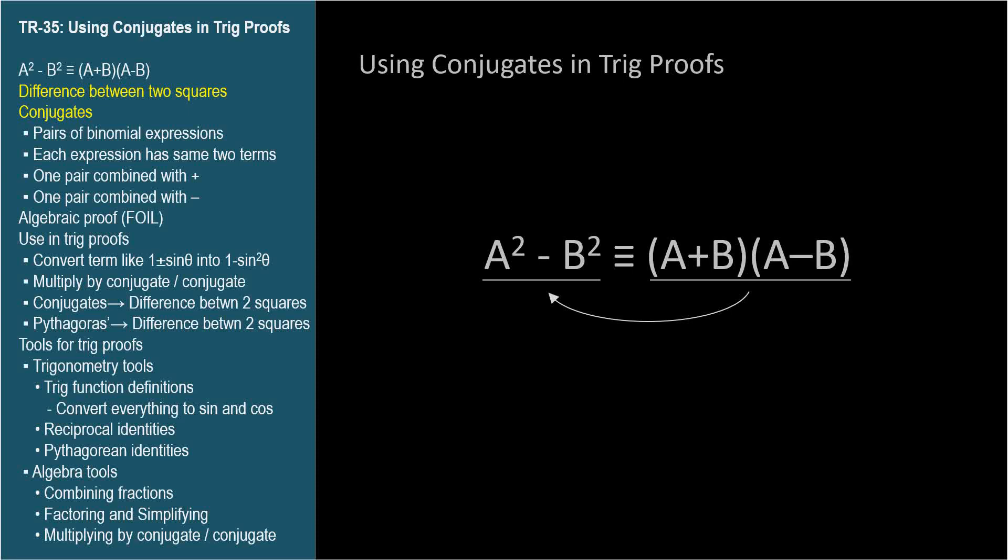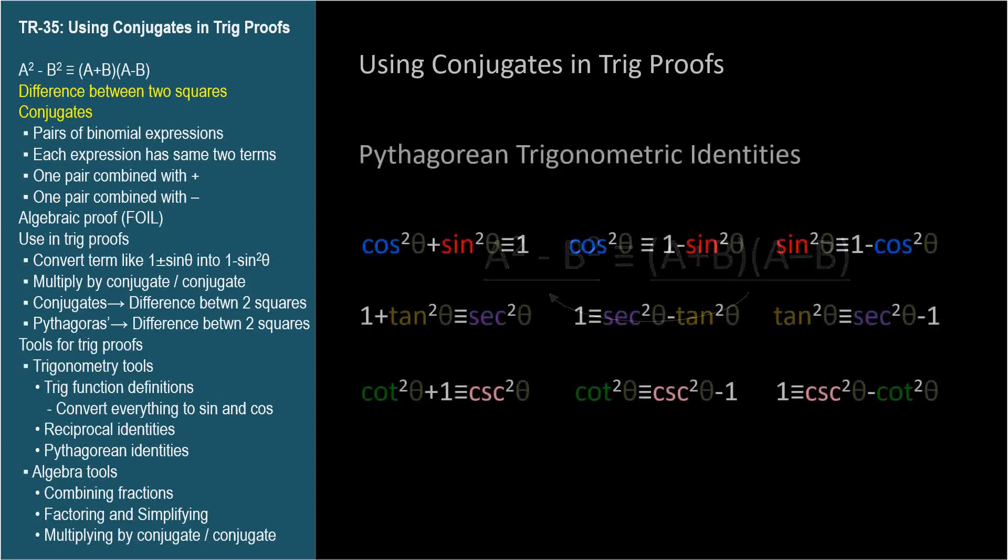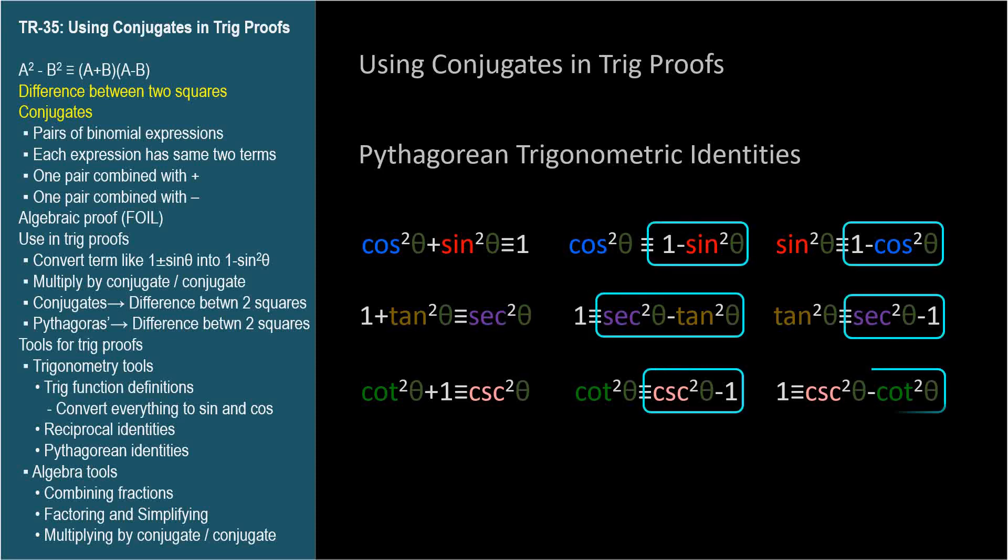But let me show you why it's particularly useful in trig. Here are the Pythagorean identities as we covered them in TR-33. Look at all these expressions that are the difference between two squares. Remember, one is a square because it's one squared. Depending on what's needed in our equation or proof, we can manipulate expressions to give us a difference between two squares, or to give us the product of a conjugate pair.